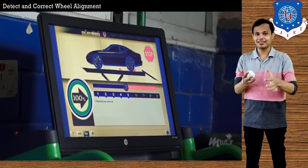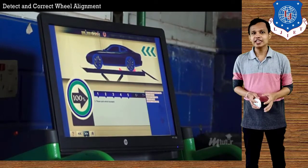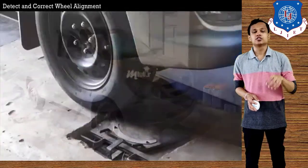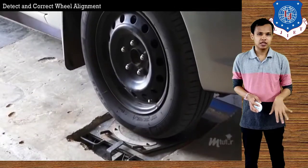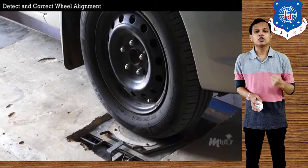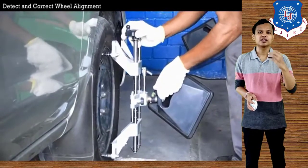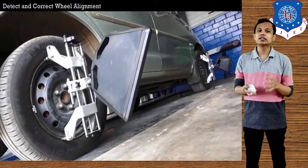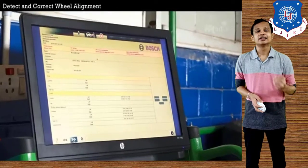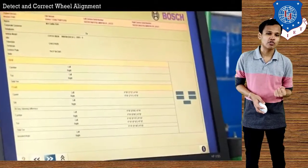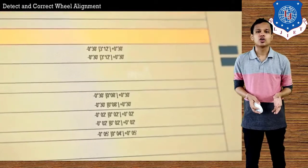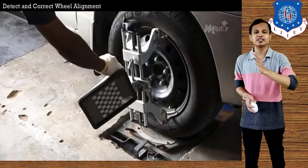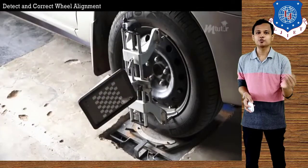To detect and correct wheel alignment, the vehicle is kept on a platform where four turntables are provided. Our vehicle wheels are placed on these turntables. After positioning the vehicle, sensor targets — called folders — are attached to each wheel, which provide sensory measurements of the angles. Once attached, the angles are displayed on a computer screen showing the camber angle, caster angle, and toe-in and toe-out values. By adjusting these targets, we can adjust the value of camber angles and toe readings.